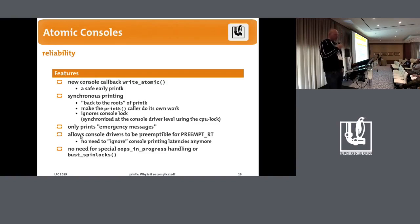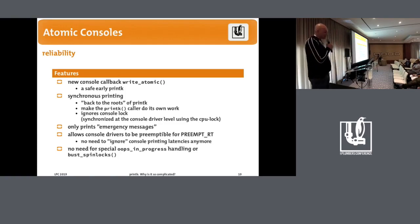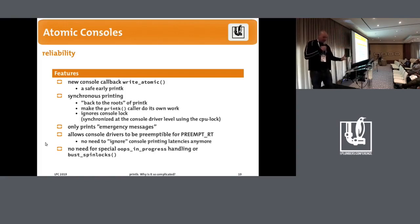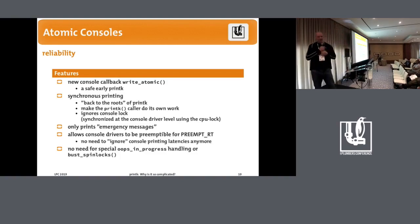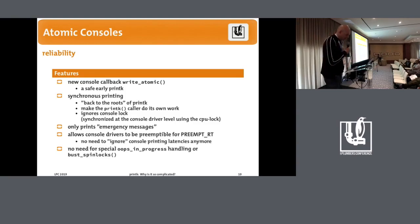There's a nice synergy with preempt-RT going mainline: in RT, the spinlocks that console drivers take are not actually disabling interrupts — they can sleep. So the atomic consoles can handle the reliability path, while the normal write path uses sleeping spinlocks without latency concerns. When we have atomic consoles, we also no longer need the oops_in_progress hack or bust_spinlocks, because we have a proper atomic write function available.